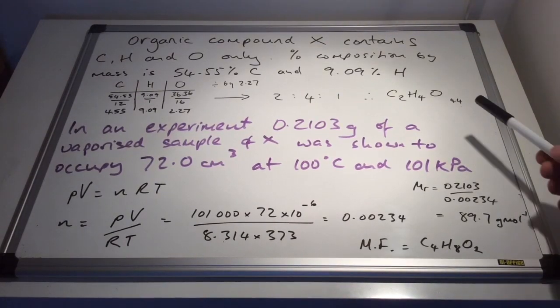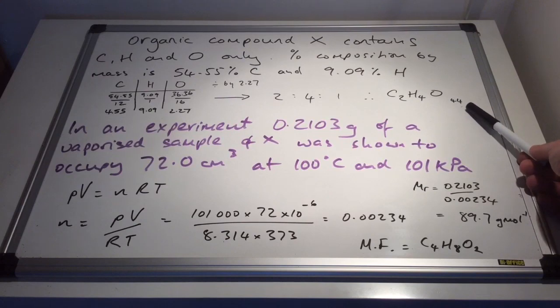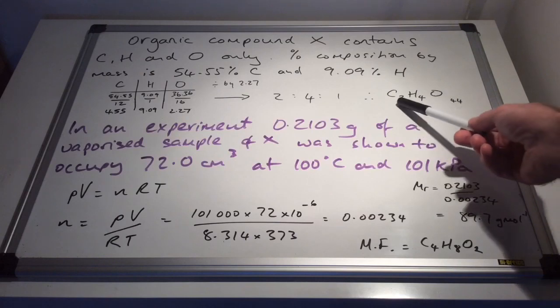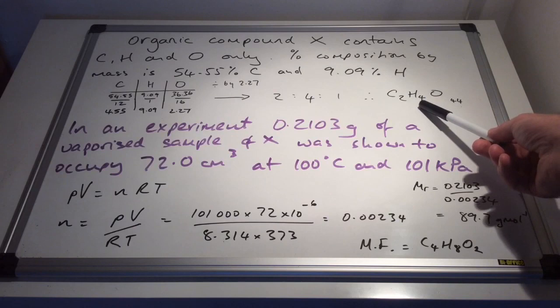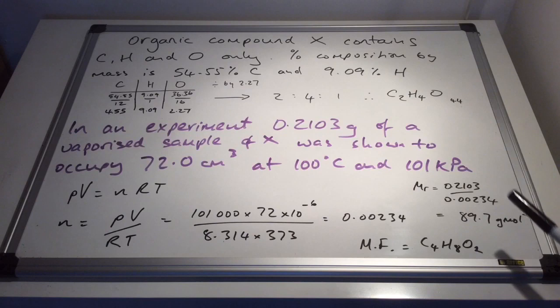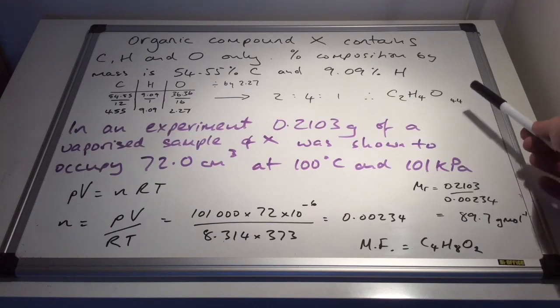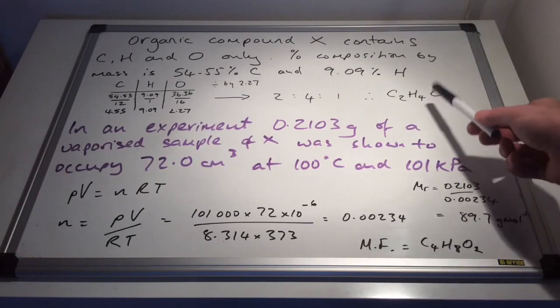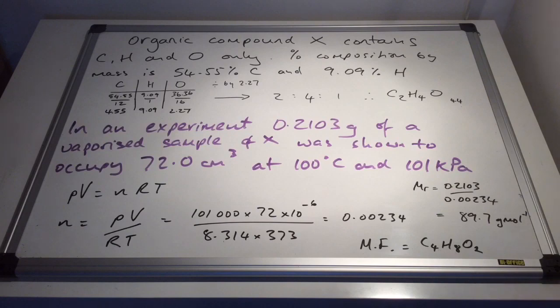So you can see I've included a 44 here. So that's the mass of the empirical formula. So 2 carbons is 24 plus that 4 is 28 plus 16 is 44. So how does the mass of the molecule compare with the mass of the empirical formula? Well, it's a tiny bit more than twice as big. And so that's telling us that the molecular formula for X must be double this. So it's C4H8O2.